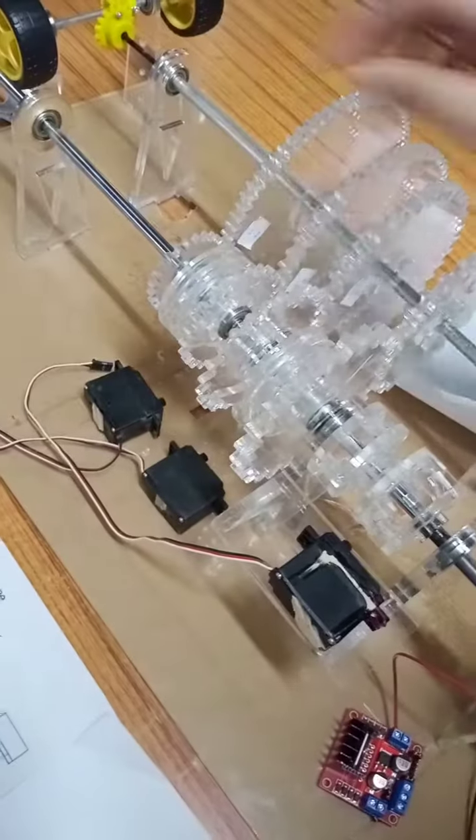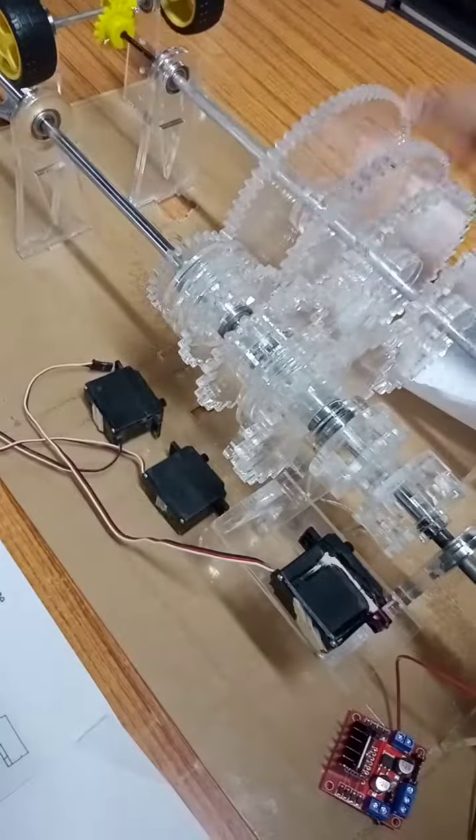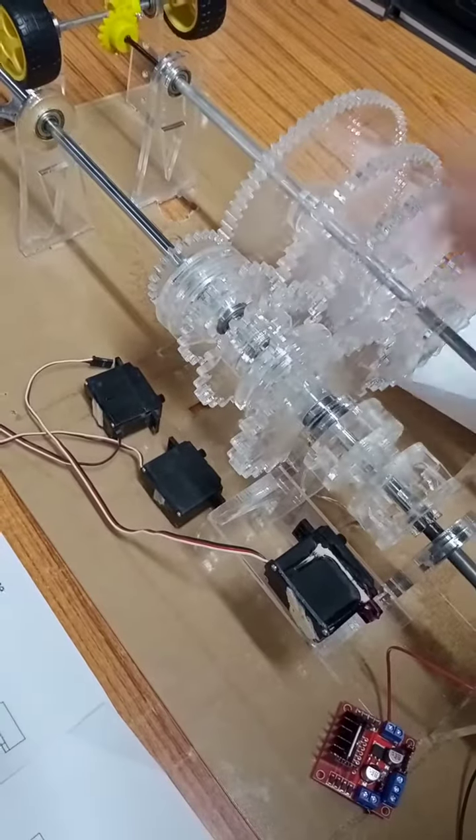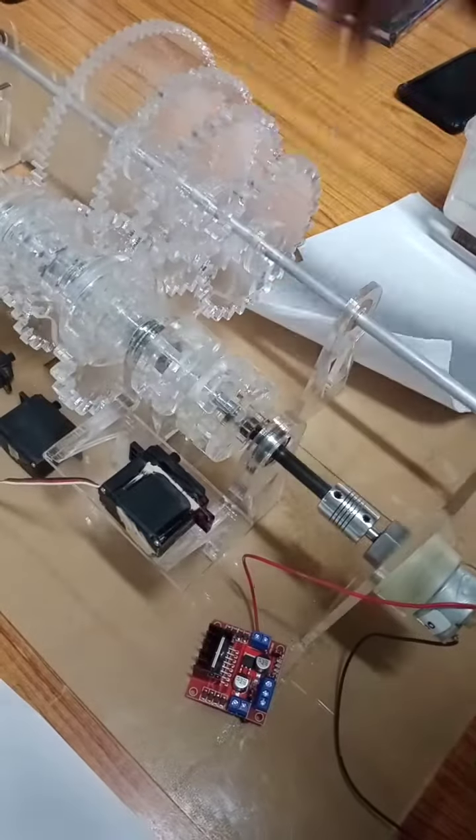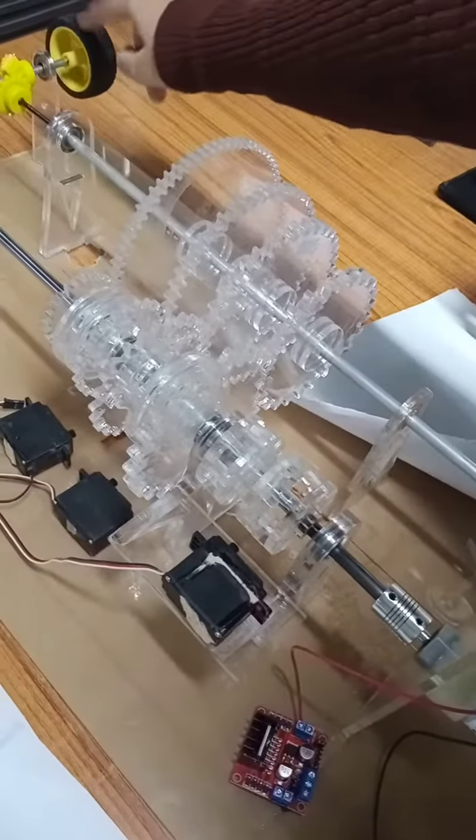This actuator is for first and second gear. This actuator is for third and fourth gear. And this is for acceleration, I mean, the clutch, for the clutch circuit. Through these mechanisms, tires will be moved.